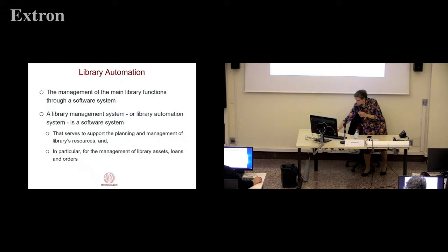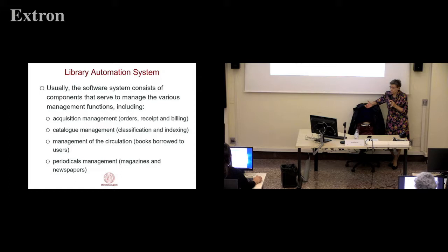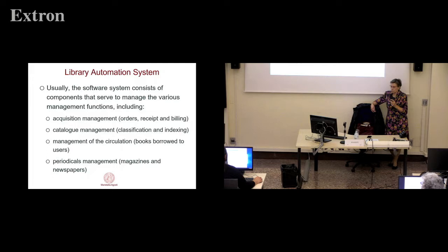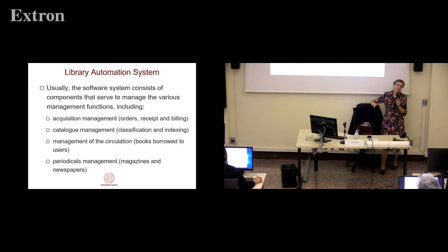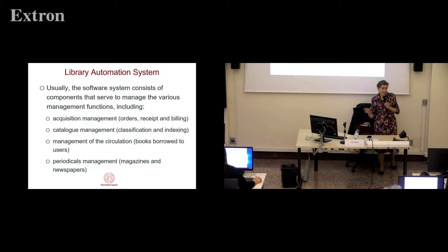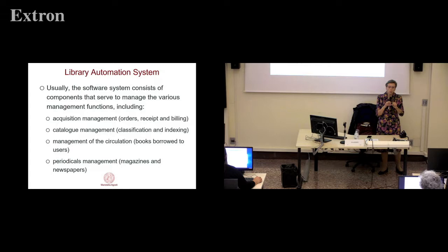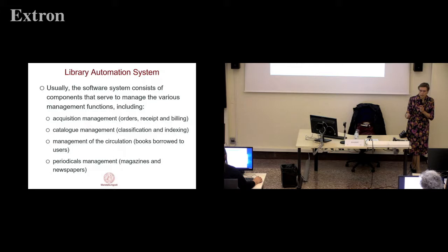A library automation system was used for acquisition management — orders, receipt, billing — catalog management, classification and indexing, management of circulation and book borrowers, but the books were moving through normal mail because we had not automated the representation of the book at that time. We had only the description: the title, authors, possibly an abstract, the classification code, and so on. And periodical management to know what journals and volumes were available in that library.